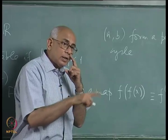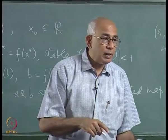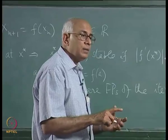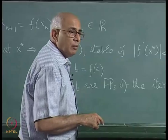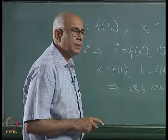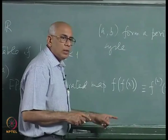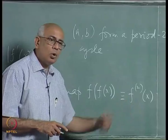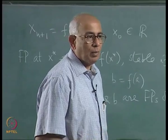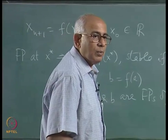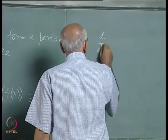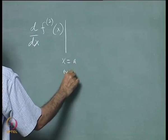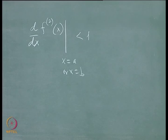In the cobweb construction, the point corresponding to initial value a maps to some b, and b maps back to a, forming a period-2 cycle. When would such a cycle be stable? It would be stable if the slope of f²(x) at the fixed point is less than 1 in modulus — that is, if |d/dx [f²(x)]| evaluated at x = a or x = b is less than 1.